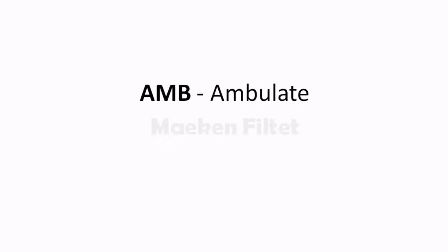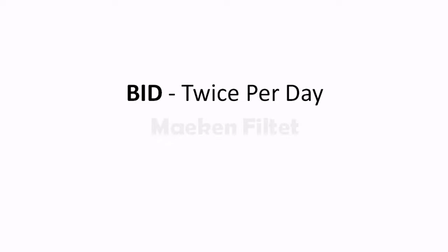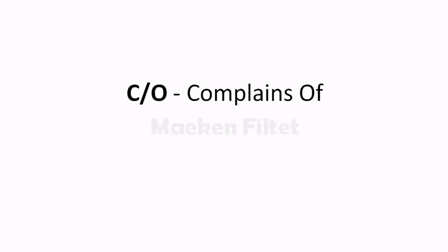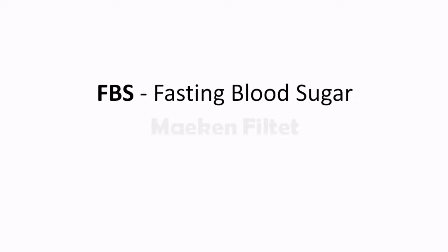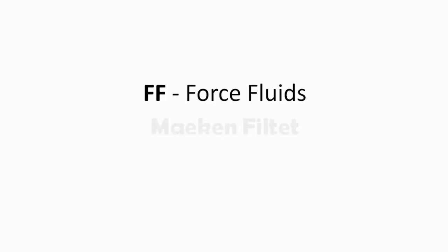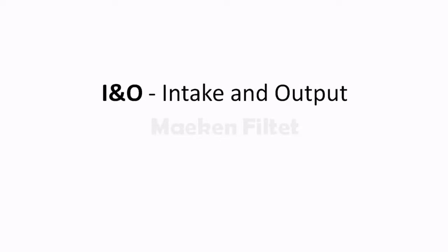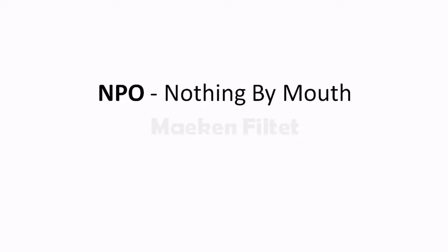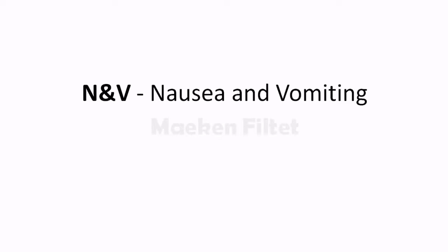Essential medical abbreviations: ac — before meals; amb — ambulate; bid — twice per day; bm — bowel movement; bp — blood pressure; cl — clear liquids; co — complaints of; dc — discontinue; fbs — fasting blood sugar; ff — force fluids; hob — head of bed; i and o — intake and output; npo — nothing by mouth.